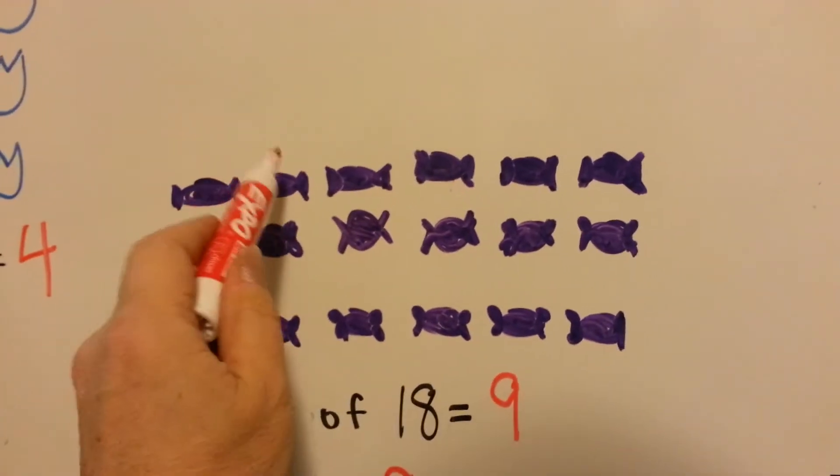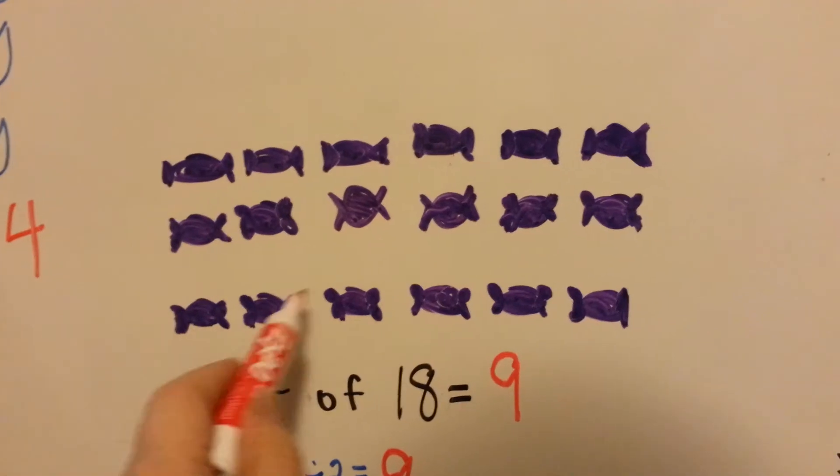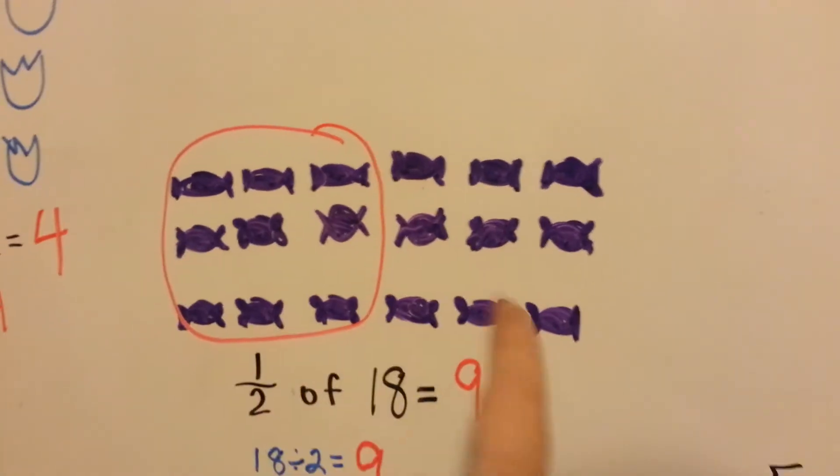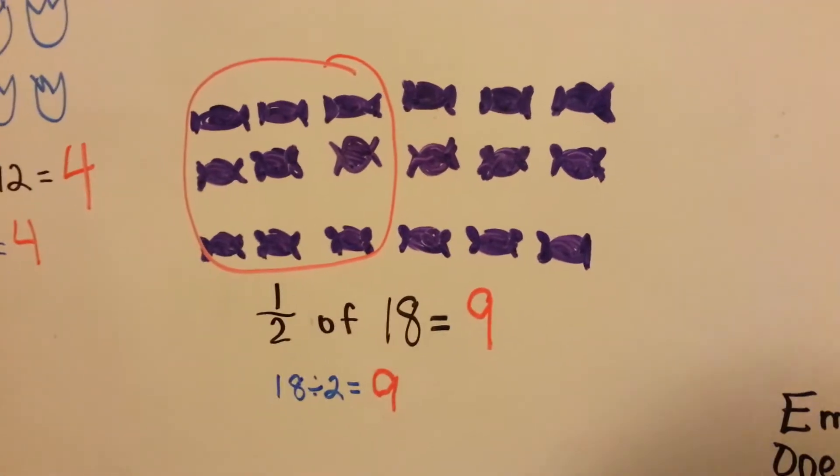So we have 1, 2, 3, 4, 5, 6, 7, 8, 9. And that is half of them. That's half of the grape candies.